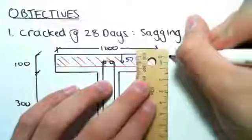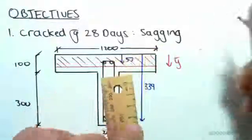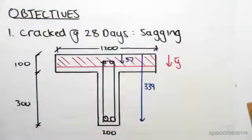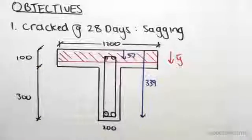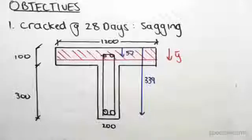This is where the neutral axis is, so we're going to call that y bar. And we're assuming it's in the flange, so we're assuming that y bar is less than 100 mils.